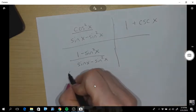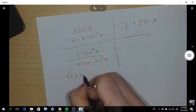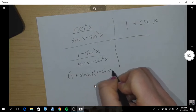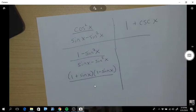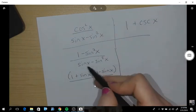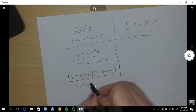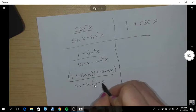So, I'm going to replace that with 1 plus sin x, 1 minus sin x, and then I'm going to GCF a sin x out and I get 1 minus sin x.